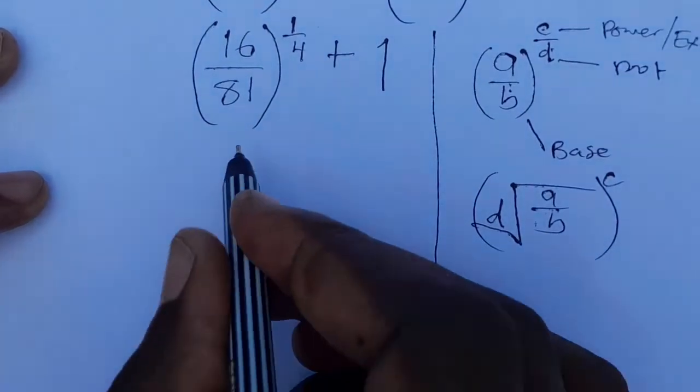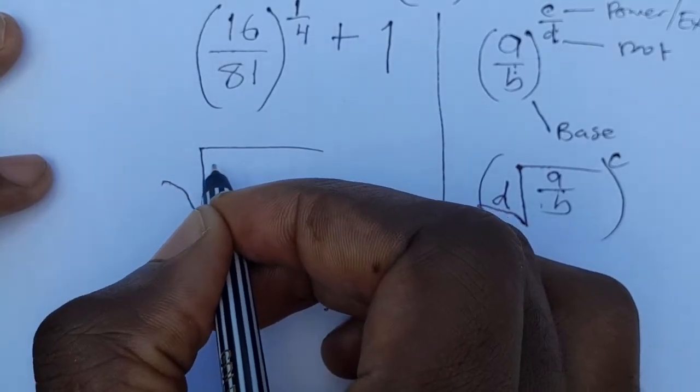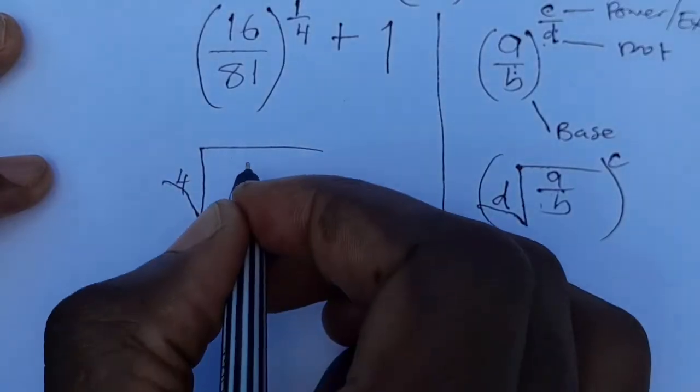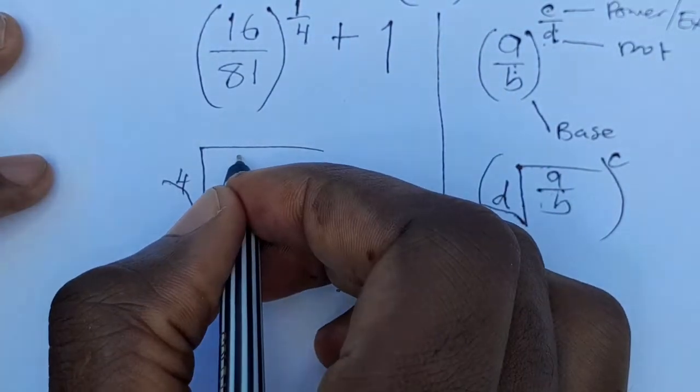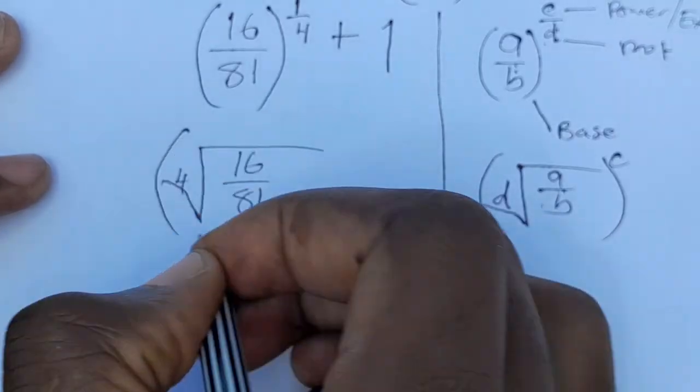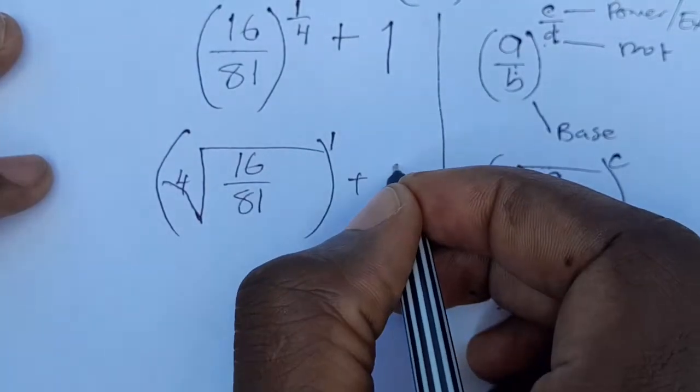So we are going to rewrite this in this form. We are going to have our d in this case is a 4, so we have a 4 here. Then the base comes here: 16 over 81. Then everything is being raised to the power 1, then plus 1.